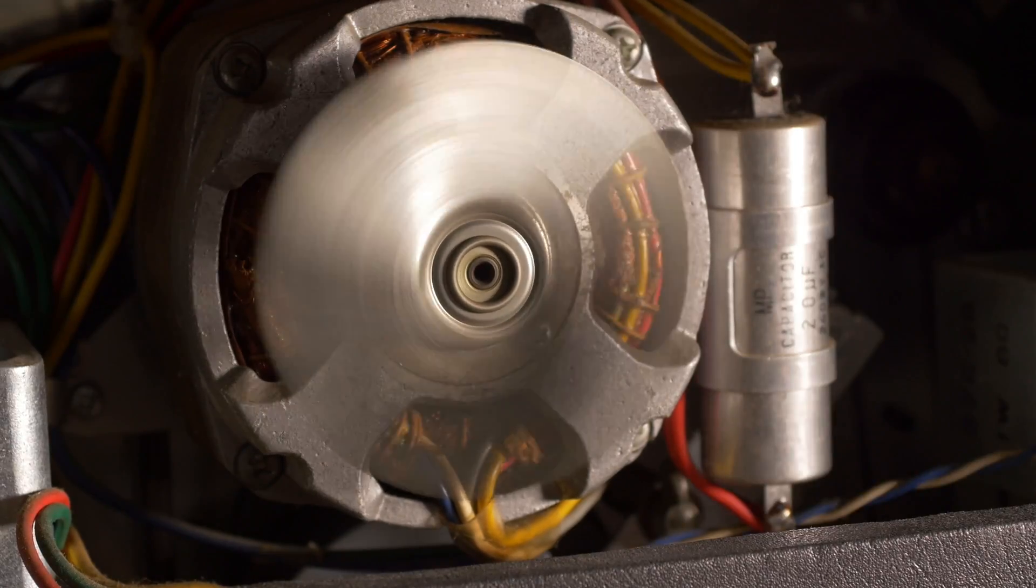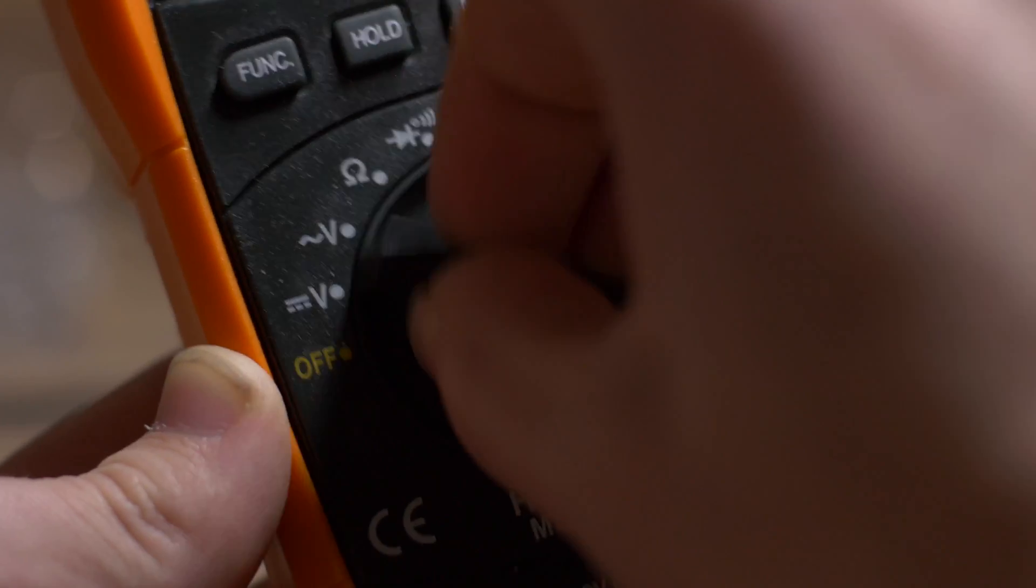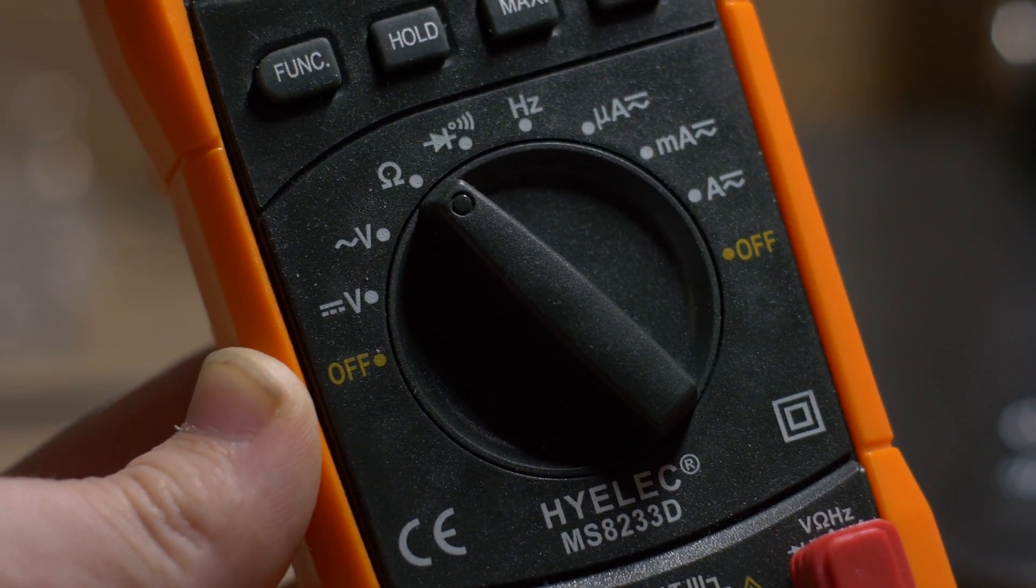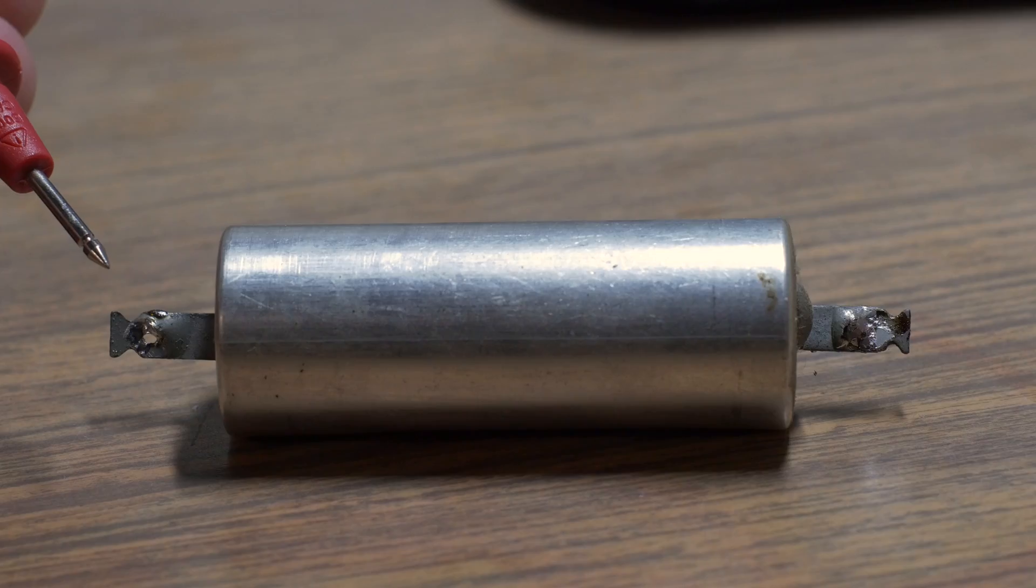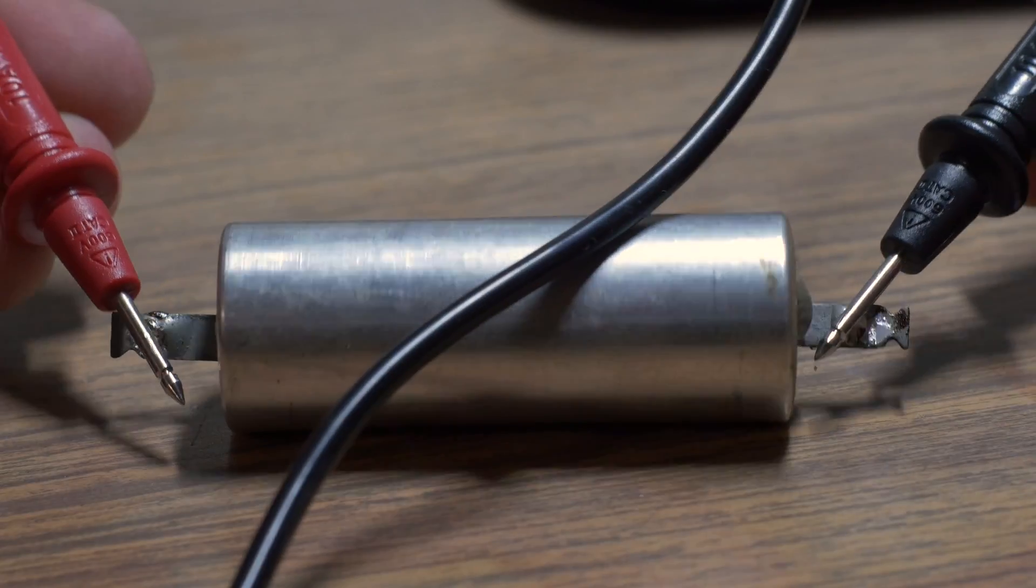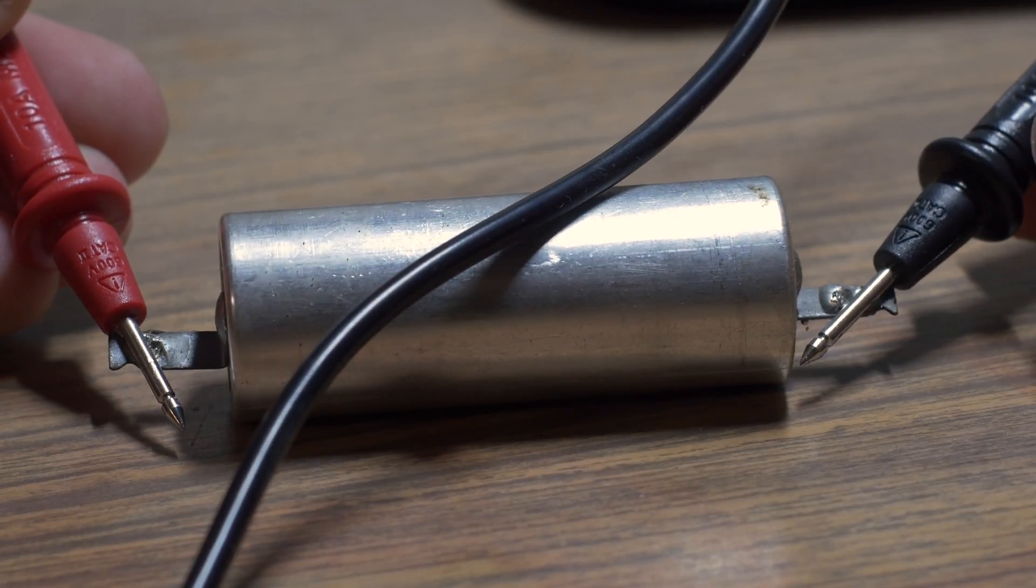To confirm that the capacitor had failed, I used a multimeter set to resistance. A good capacitor would show low resistance for a moment, then jump up to overload. This is because the multimeter is running a small current through the leads to test resistance, and that current charges the capacitor, and once charged, no current can continue to flow, thus infinite resistance.